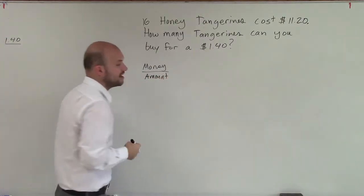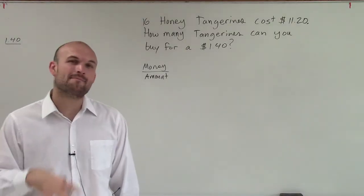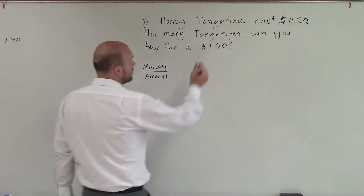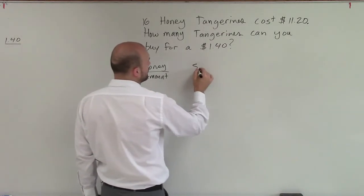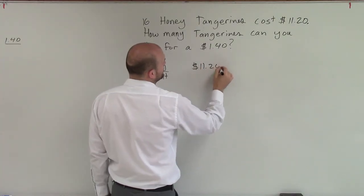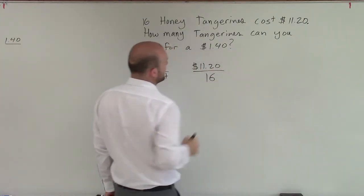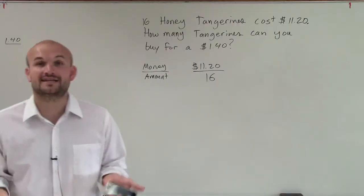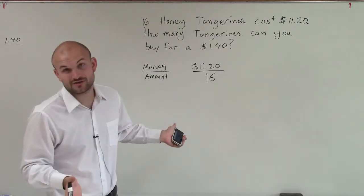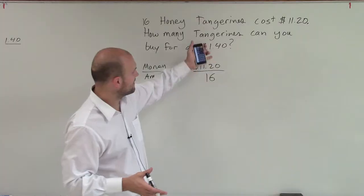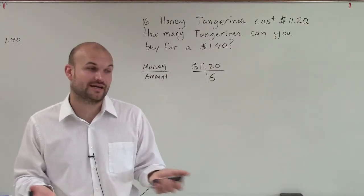So what we're going to do is say, if I have so much money, how can I buy for that amount of money? So we are given information that for $11.20, we're able to buy 16. Now, we could find a cost per tangerine, or actually just divide it the other way and have a cost per tangerine.